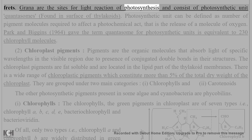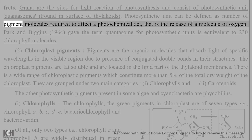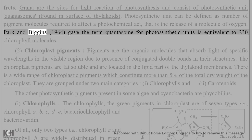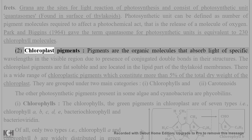Grana consist of photosynthetic units called quantasomes found on the surface of thylakoids. A photosynthetic unit can be defined as the number of pigment molecules required to affect a photochemical act, that is, the release of a molecule of oxygen. Park and Biggins (1964) gave the term quantasome for photosynthetic units, which is equivalent to 230 chlorophyll molecules per chloroplast.